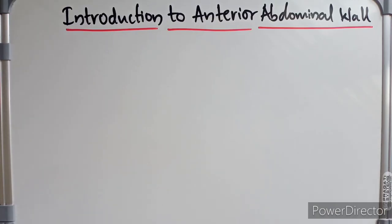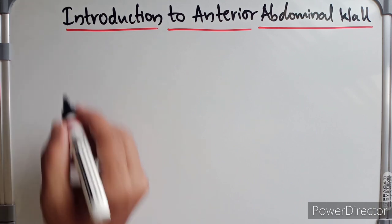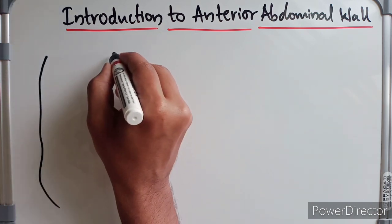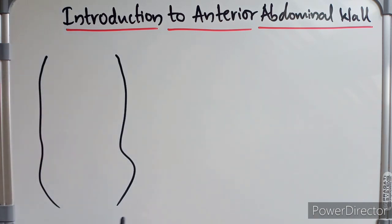Hello guys, welcome to my video. In this video I am going to introduce you to the anterior abdominal wall and discuss the layers present in it. The anterior abdominal wall is the musculo-aponeurotic structure confined to the anterior and lateral aspects of the abdomen.